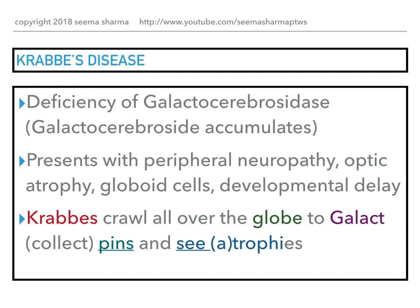My way of remembering this is: 'Crabs crawl all over the globe to galact pins and sea trophies.' Crabs helps you remember the name of the disease. Crawl helps you remember the developmental delay. Globe is for the globoid cells. Galact, said fast, helps you remember that galactocerebroside is what accumulates. PINS helps you remember peripheral neuropathy. And C-trophies helps you remember optic atrophy.